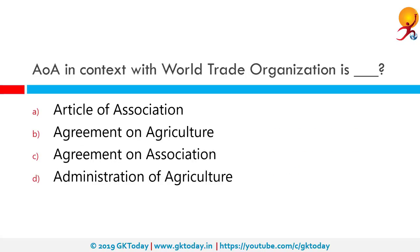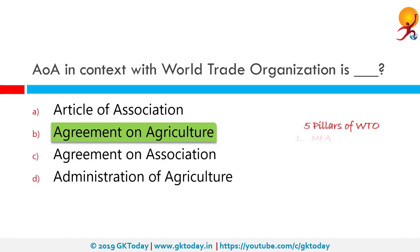AOA in the context of the World Trade Organization stands for Agreement on Agriculture. The pillars of the WTO are: 1. Multi Fiber Agreement (MFA), 2. Agreement on Agriculture (AOA), 3. Trade Related Investment Measures (TRIMs), 4. Trade Related Intellectual Property Rights (TRIPs), and 5. General Agreement on Trade and Services (GATS).